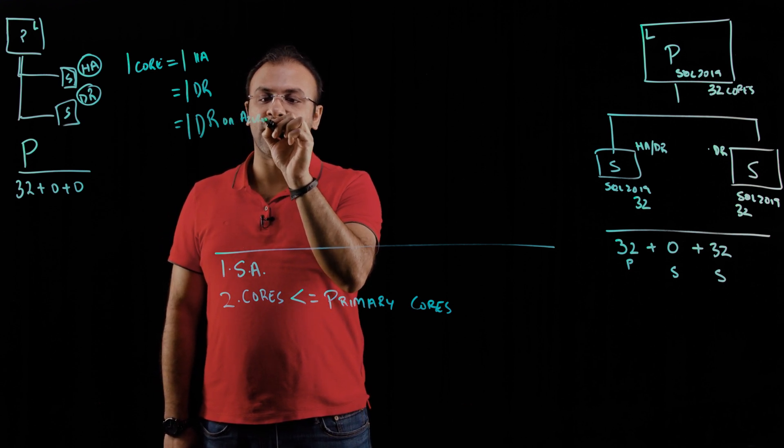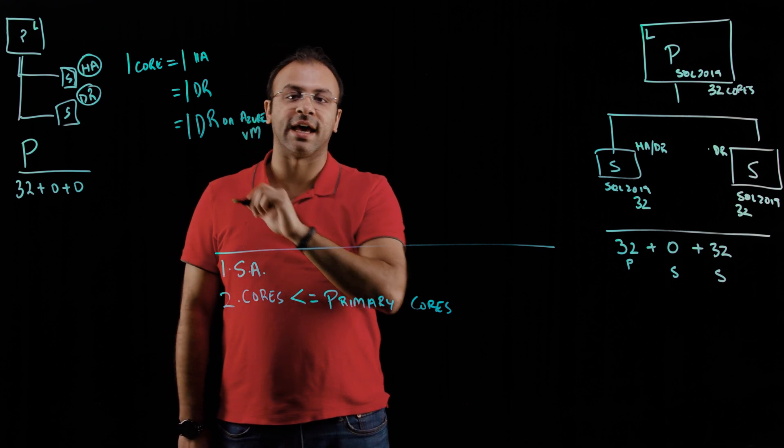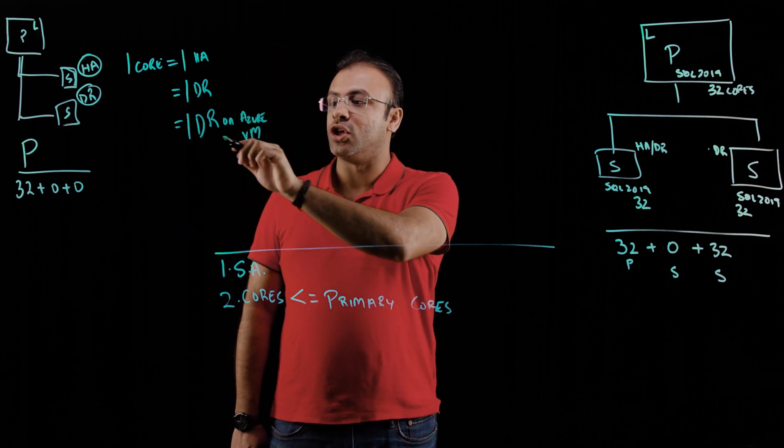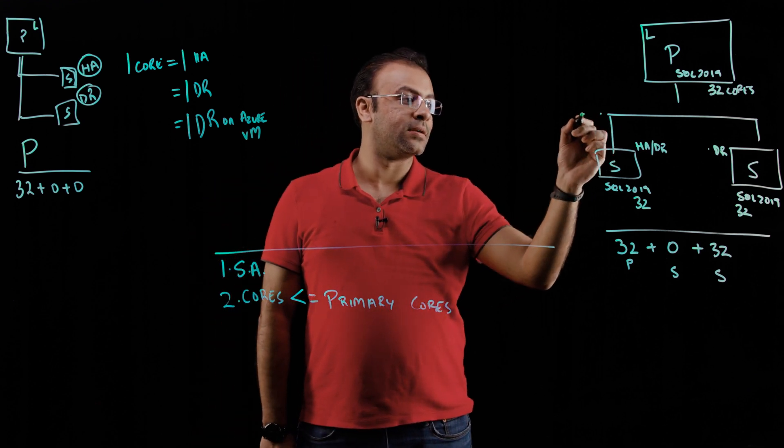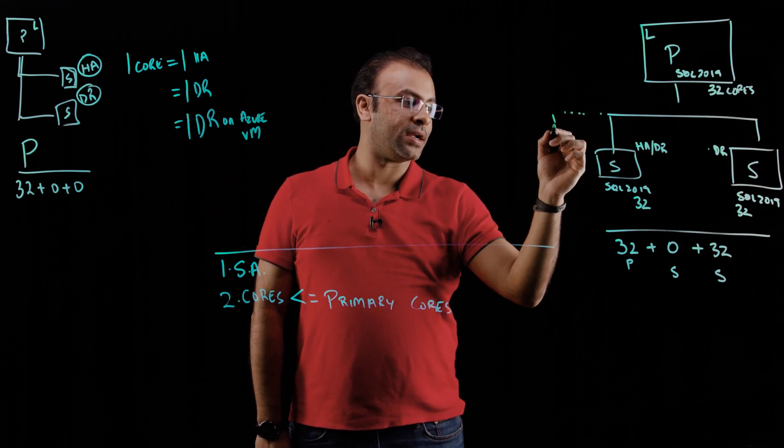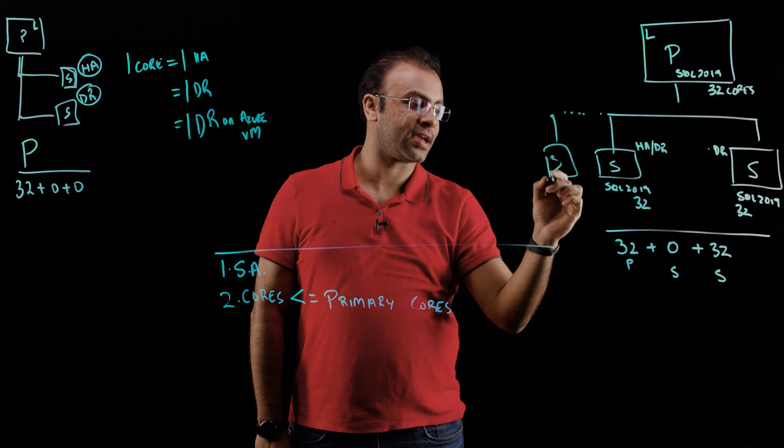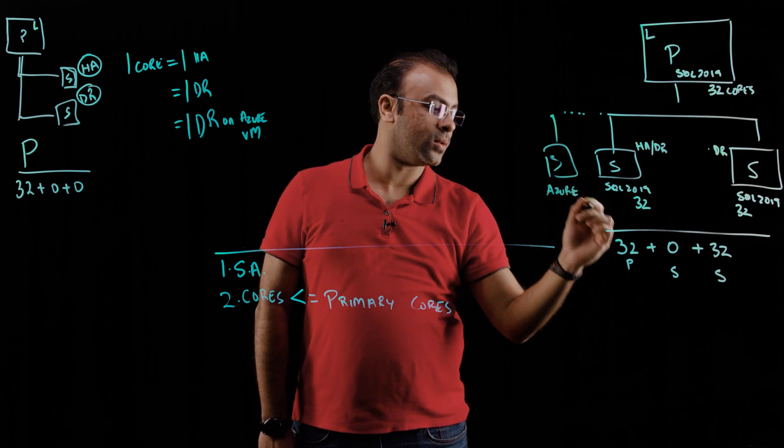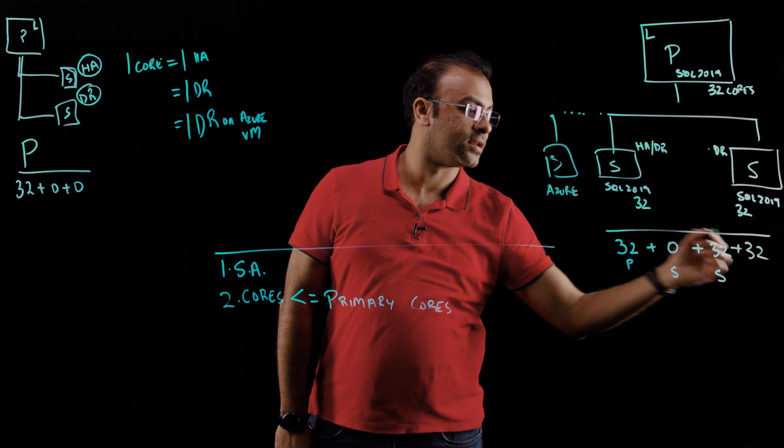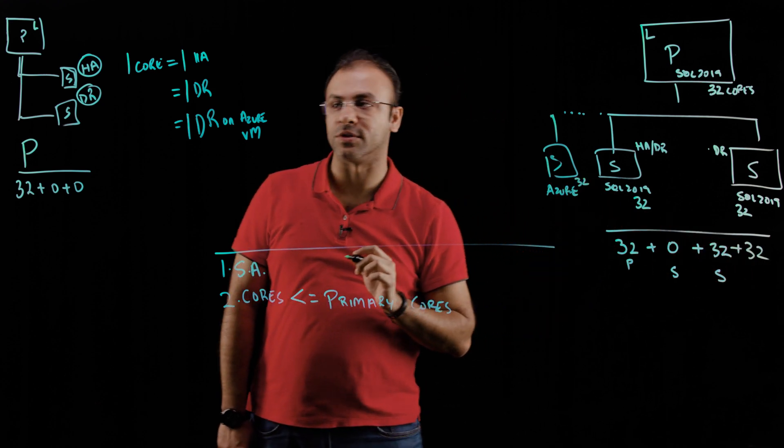So if you're running on an Azure virtual machine and you're using that as a disaster recovery site, you also get that for free. So in this architecture, let's say prior to November, you added a secondary, but this was on an Azure VM, you would pay another 32 cores provided this had 32 virtual cores.